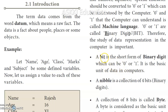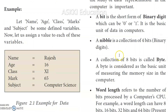Four bits together are called a nibble — it is a collection of 4 bits. A collection of 8 bits is called a byte. Byte is considered the basic unit of measuring memory size in a computer. Computer memory size is expressed in terms of bytes.